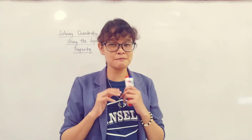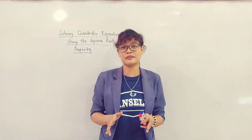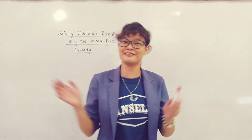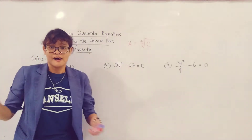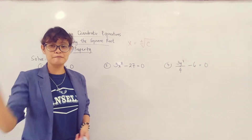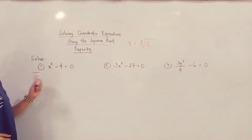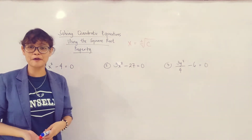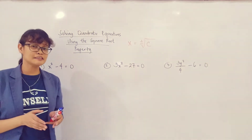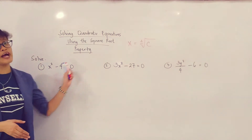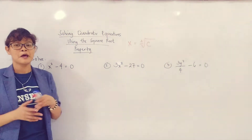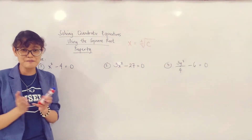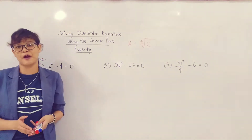Alright, so without further ado, para mas maintindihan natin kung paano ginagamit yung Square Root Property, let us work on a couple of exercises. Now let's have example number one. You have x squared minus 4 equal to zero. Kapag gusto mong gamitin yung Square Root Property, ang unang mong gagawin is to transpose the constant number to the other side of the equation, by applying either the addition property of equality or the subtraction property of equality.